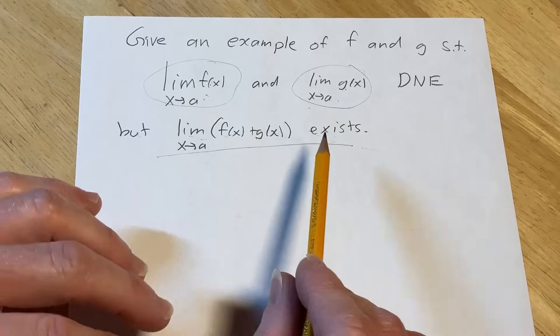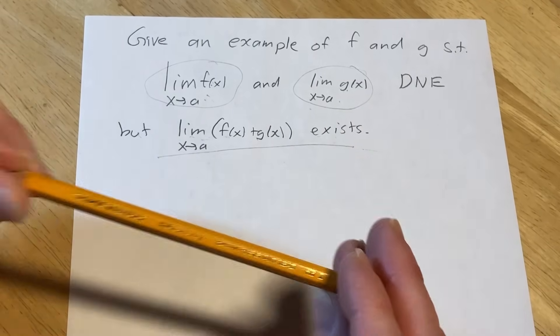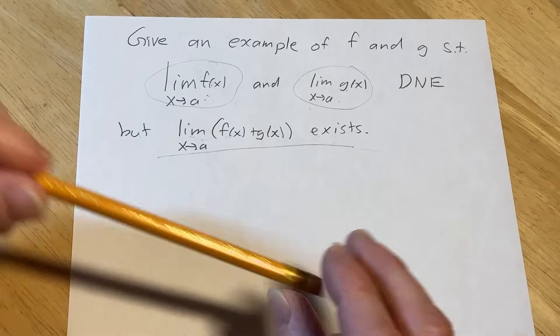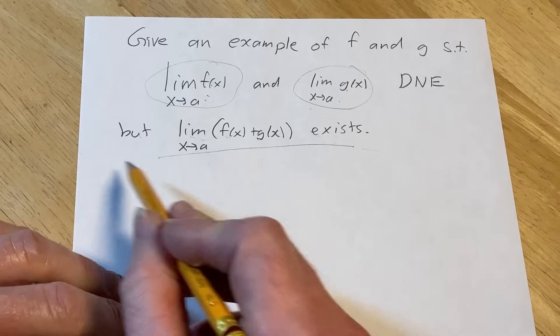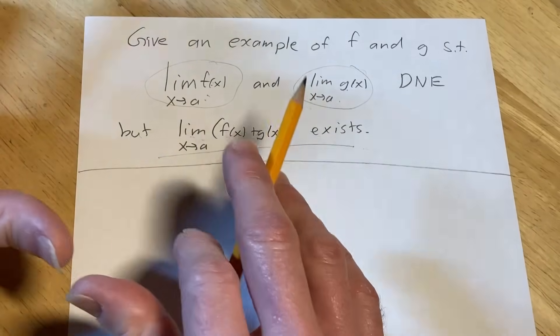And he went on the board and he did this example. The reason he did this example is because we had turned in a homework assignment and several of us did it wrong, including myself. So this is a good problem.